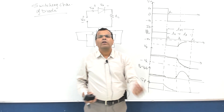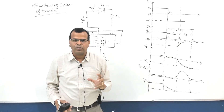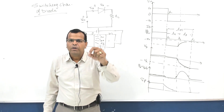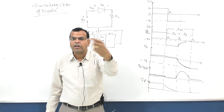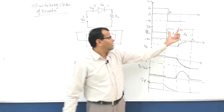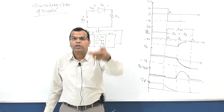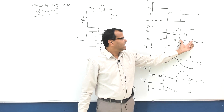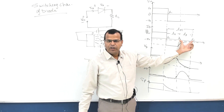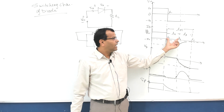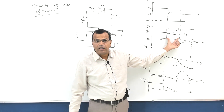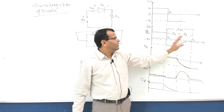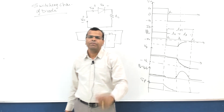That duration is called the transition period. The transition period is the time required to charge the transition capacitance. The storage time is the time required to discharge the storage capacitance. The total period from T1 to T3 is called reverse recovery time.